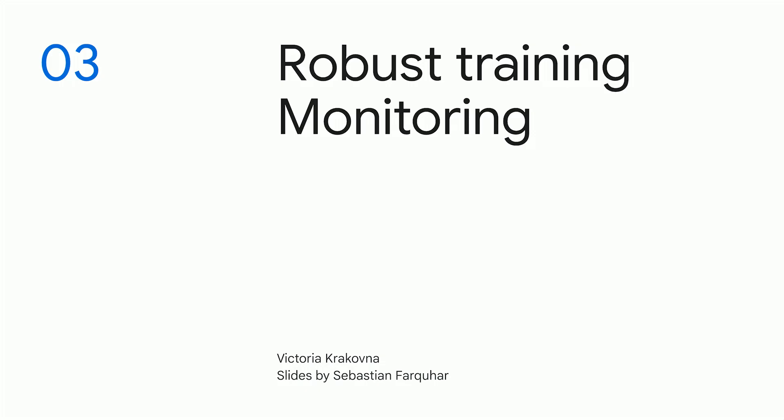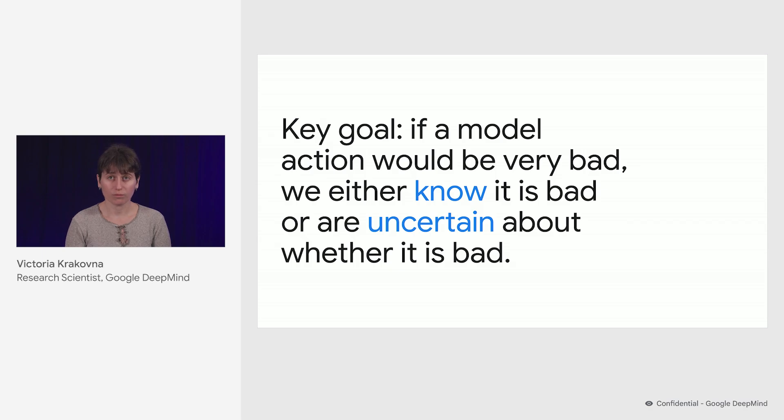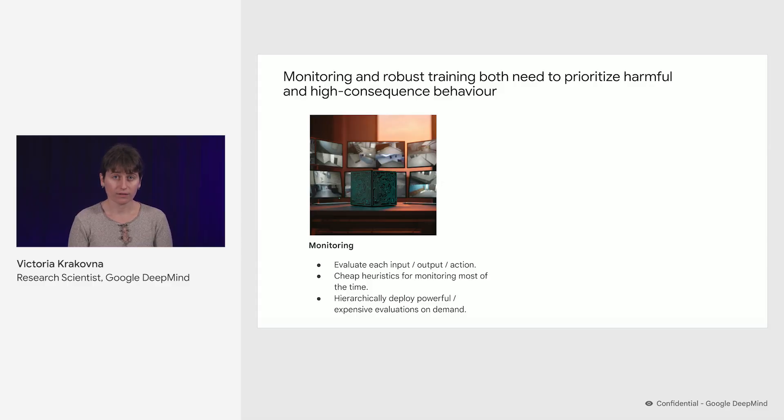Hi everyone, I'm Victoria, and in this talk we'll be learning about robust training and monitoring. The key goal here is that if a model's action would be bad, then we either know that it would be bad or we are uncertain about whether it would be bad. What we're trying to avoid is cases where we incorrectly believe that something would be good, even though it would actually be bad. Both monitoring and robust training are important for this, and both need to prioritize harmful and high-consequence behavior.